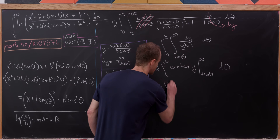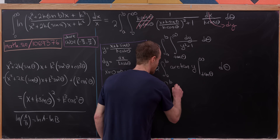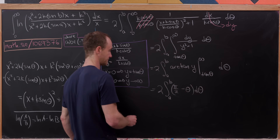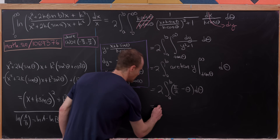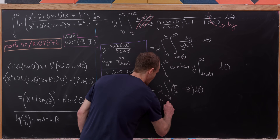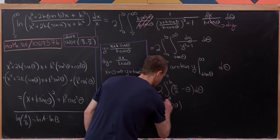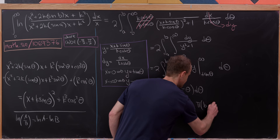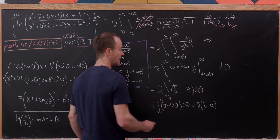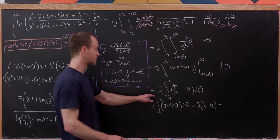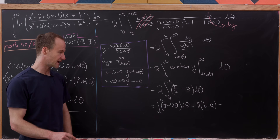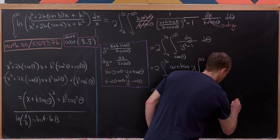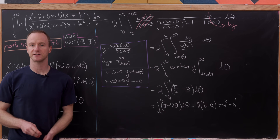This gives us 2 ∫_a^b (π/2 − θ) dθ = ∫_a^b (π − 2θ) dθ. Evaluating yields π(b − a) minus [θ²] from a to b, which is π(b − a) + a² − b². That's our final answer, and that's a good place to stop.